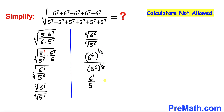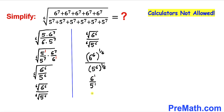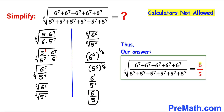Now 6^1 is simply 6, and 5^1 is simply 5. That's our simplified answer. So the simplified answer to this given radical problem turns out to be 6 divided by 5.